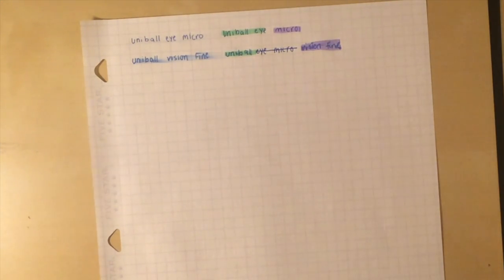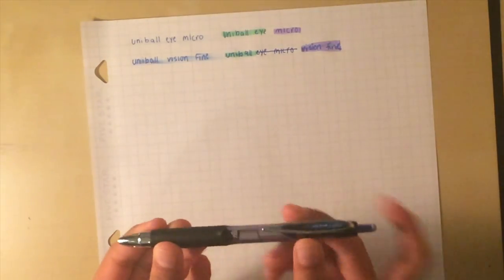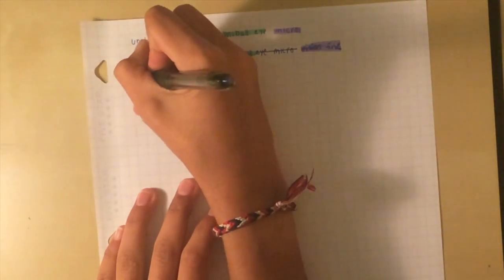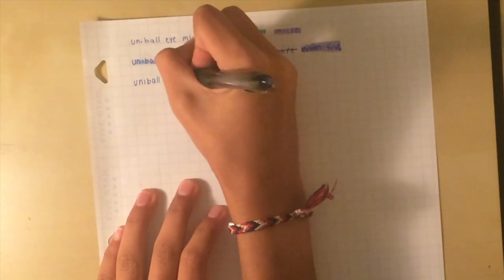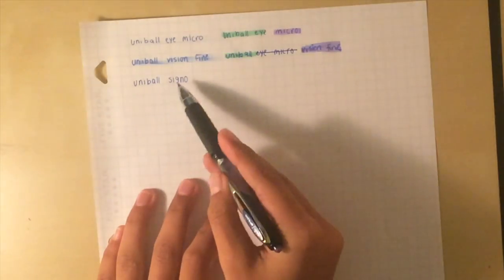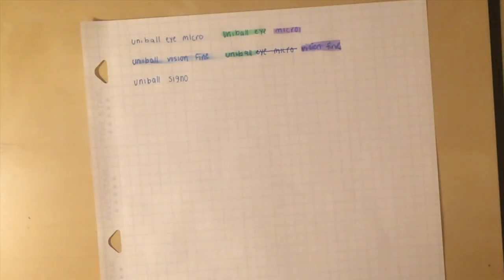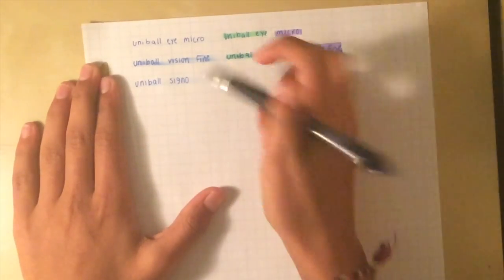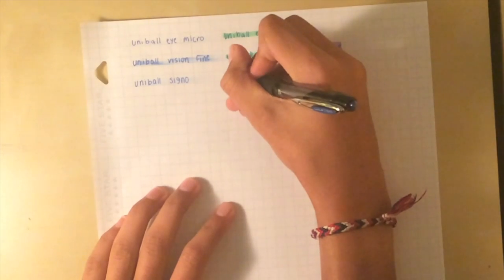So next let's go to the Uniball Signo. This is actually a retractable pen while the other ones are cap pens. It's about in between these two with thickness in mind, and it has light smearing, just like the Uniball Eye Micro. Not much to be concerned about.